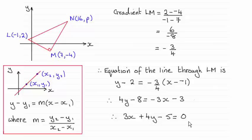So here's the answer, 3X plus 4Y minus 5 equals 0.